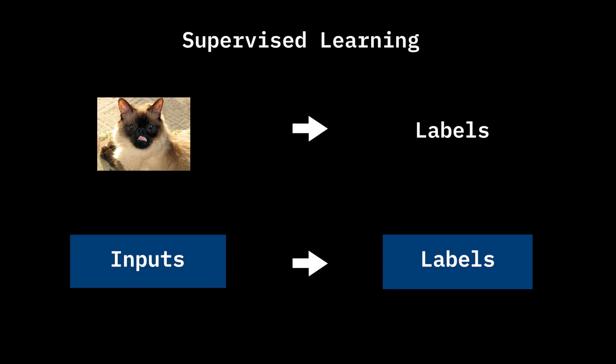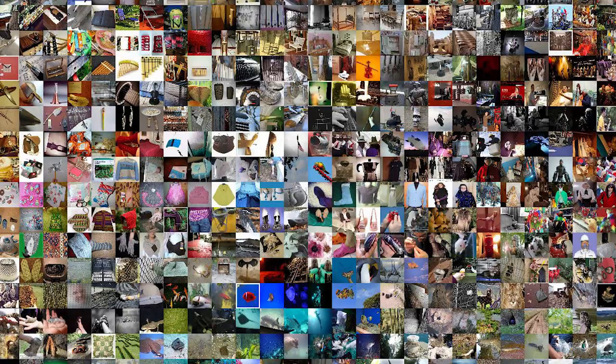This works very well given one main thing: a lot of labeled data. But we have a lack of labeled data in real world applications. Labeling data is expensive, which is a bottleneck for supervised learning. On the other hand, we have tons of unlabeled data on the internet which supervised learning cannot make use of without labels.